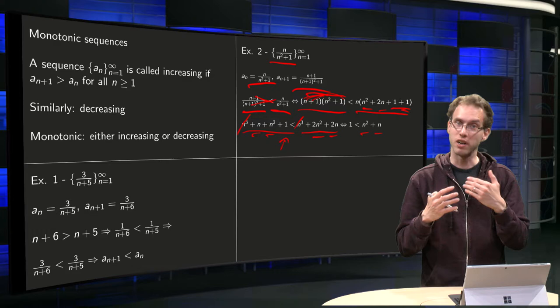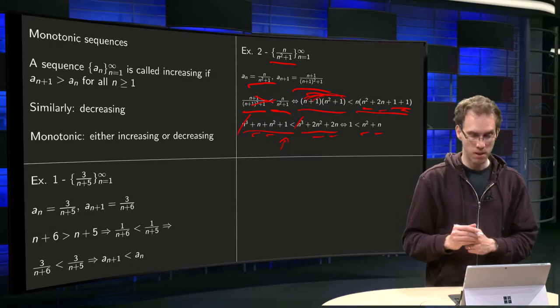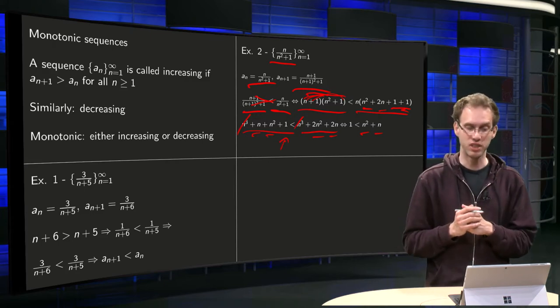So since this last statement is true, all of them are true because they are equivalent, which means that we see that the first one is true, An+1 smaller than An, which means that our sequence is decreasing.